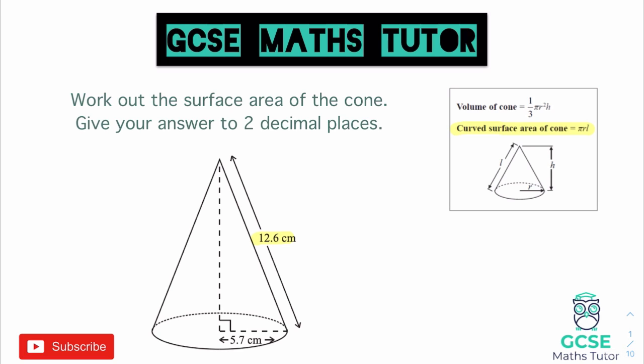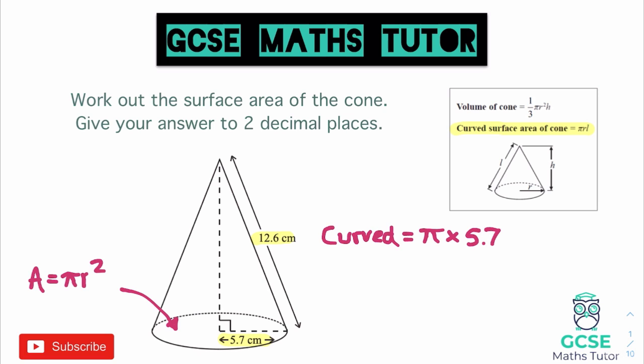In this question we are given L, which is 12.6, we are given the radius, which is 5.7, and pi is obviously the button on our calculator. If we want to work out the surface area, we've got a formula for getting the curved part around the outside, but we're also going to have to add on the area of the circle on the bottom. The formula for the area of a circle is pi r squared. We've got everything we need now - we're going to do pi r squared for the area of the circle, and pi r L for the curved surface area. So the curved surface area will be equal to pi multiplied by 5.7 multiplied by 12.6. This question is very nice because it gives us all of those pieces.